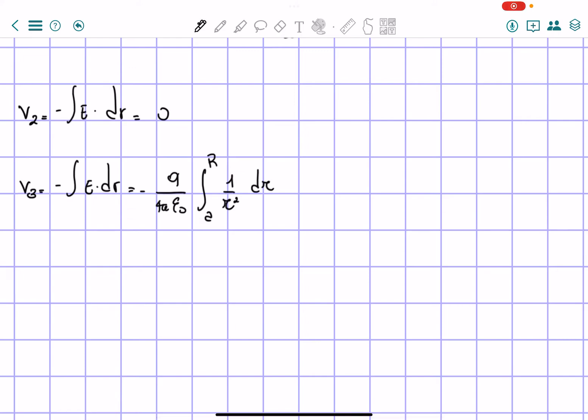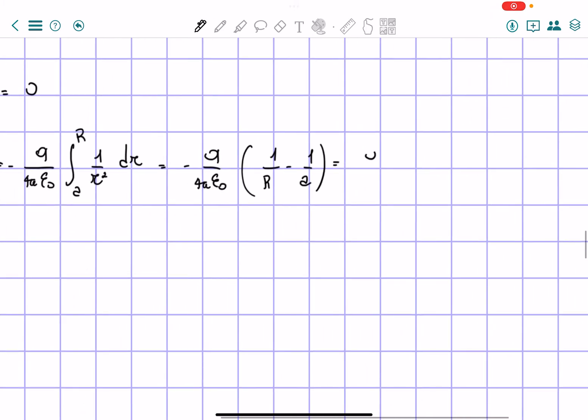So we have q over 4 pi epsilon naught, 1 over a minus 1 over R.